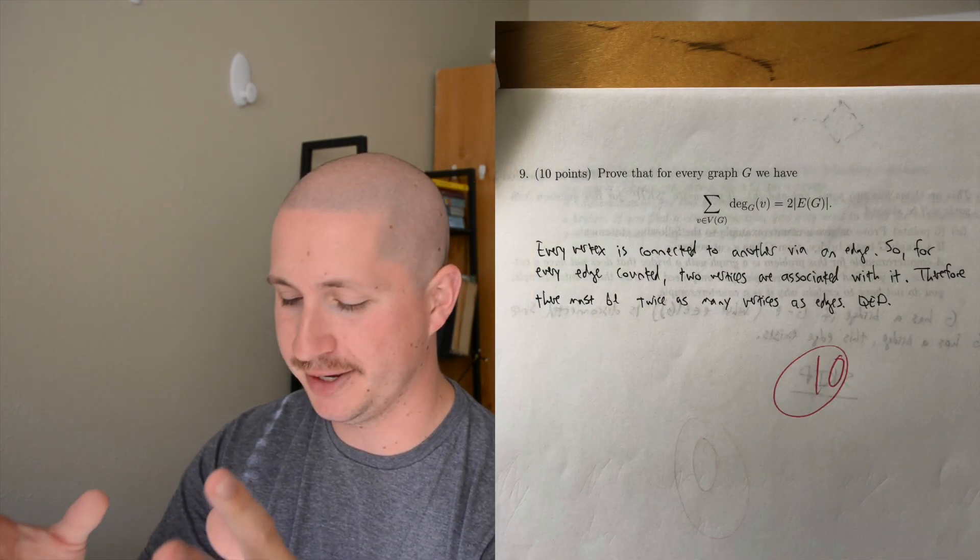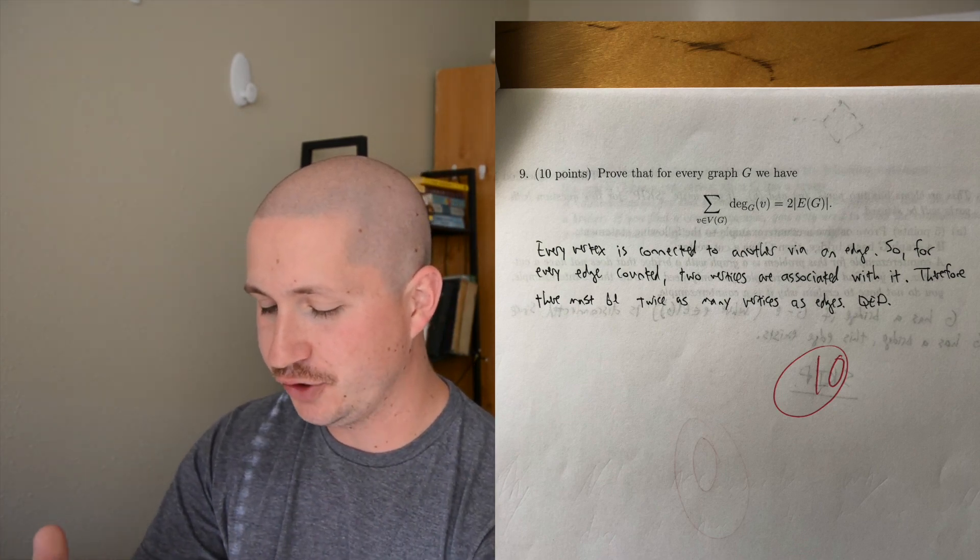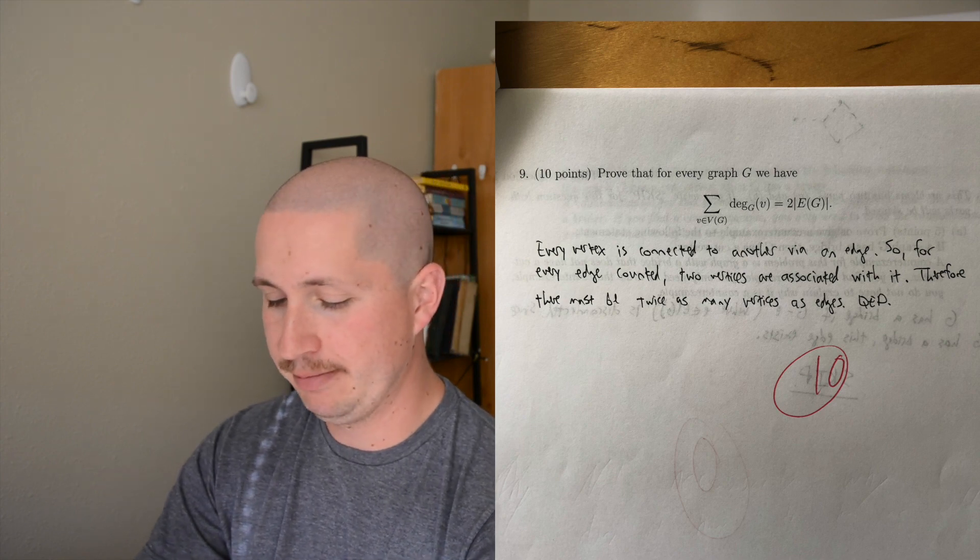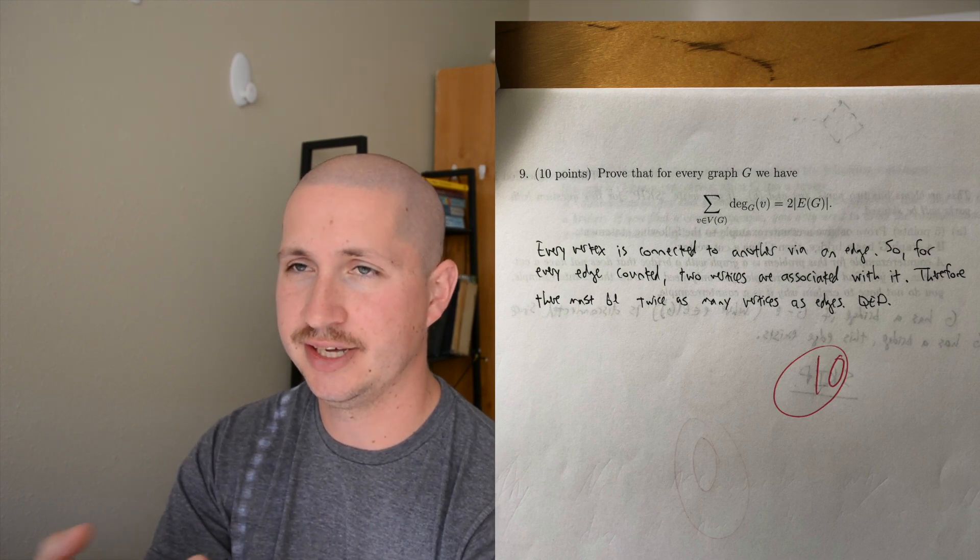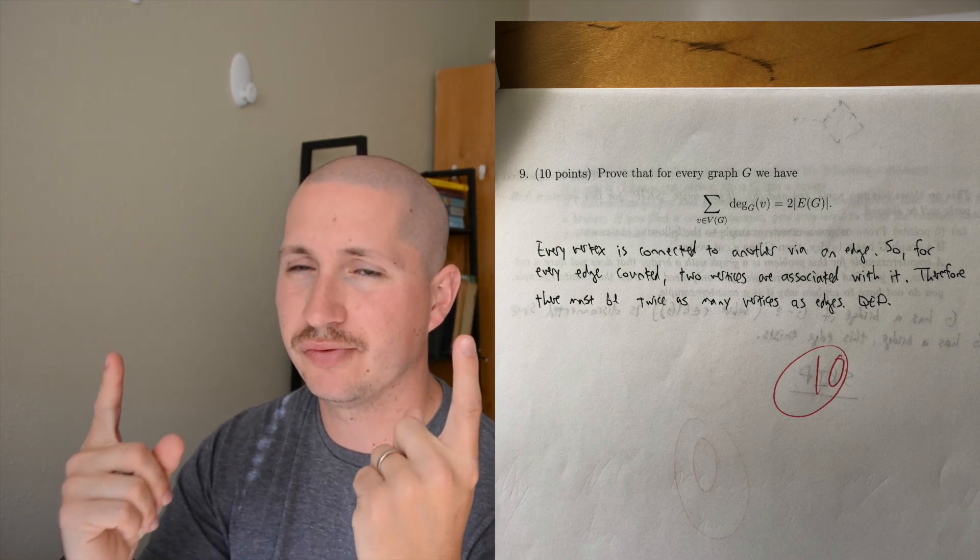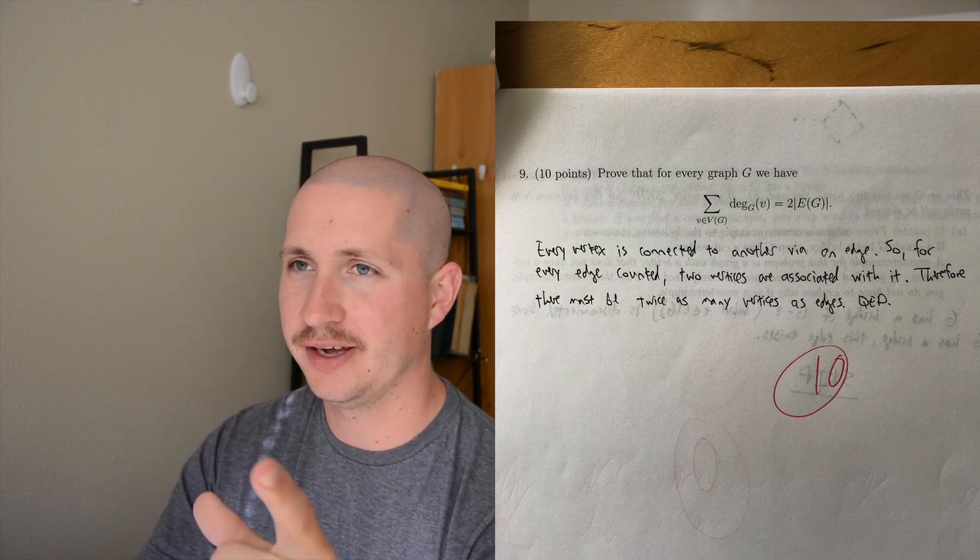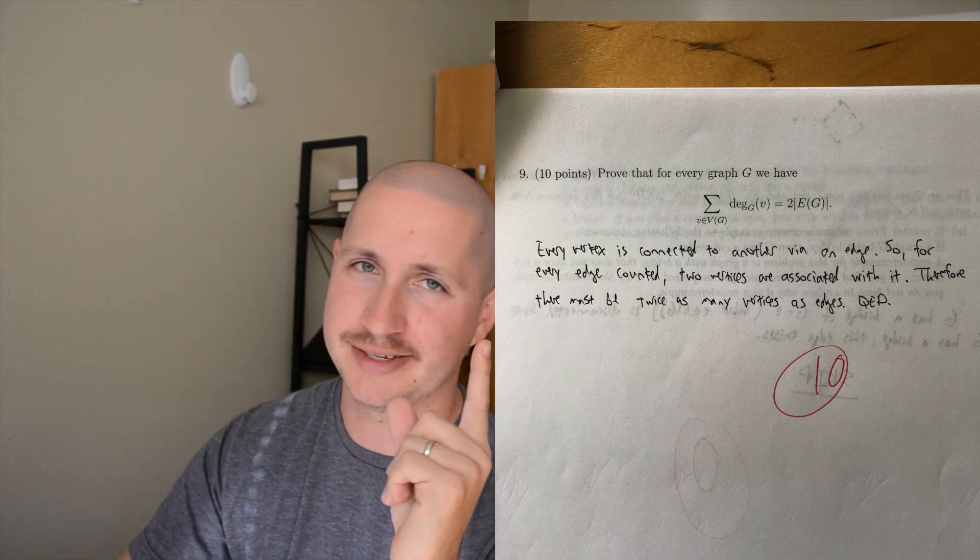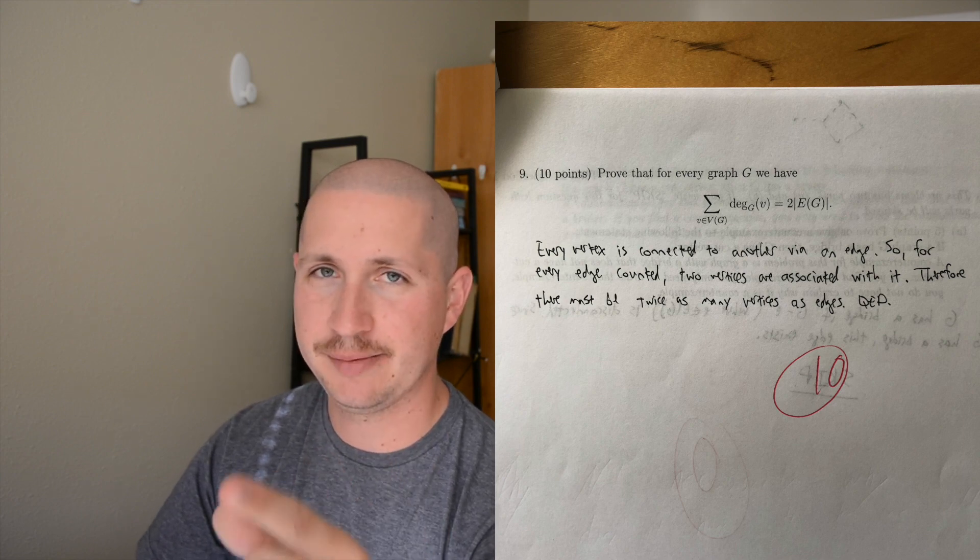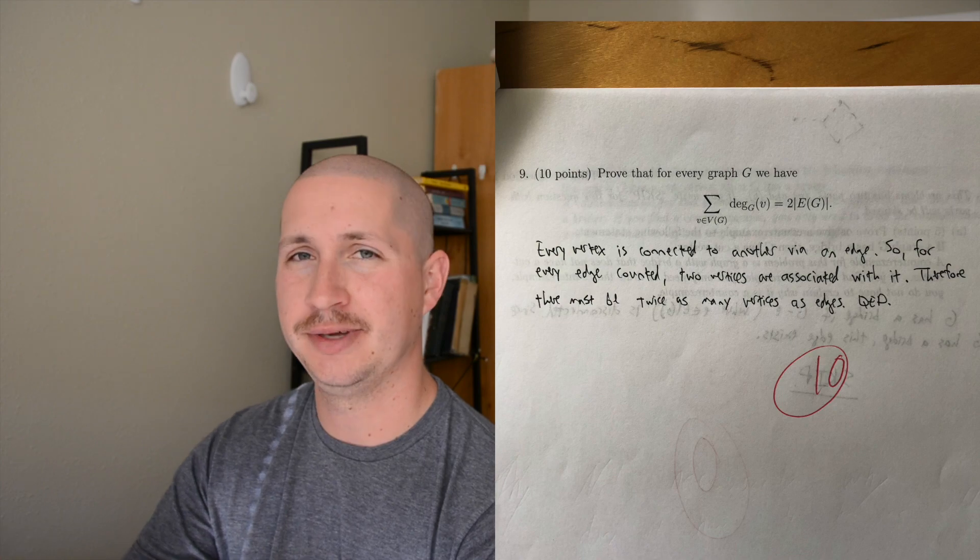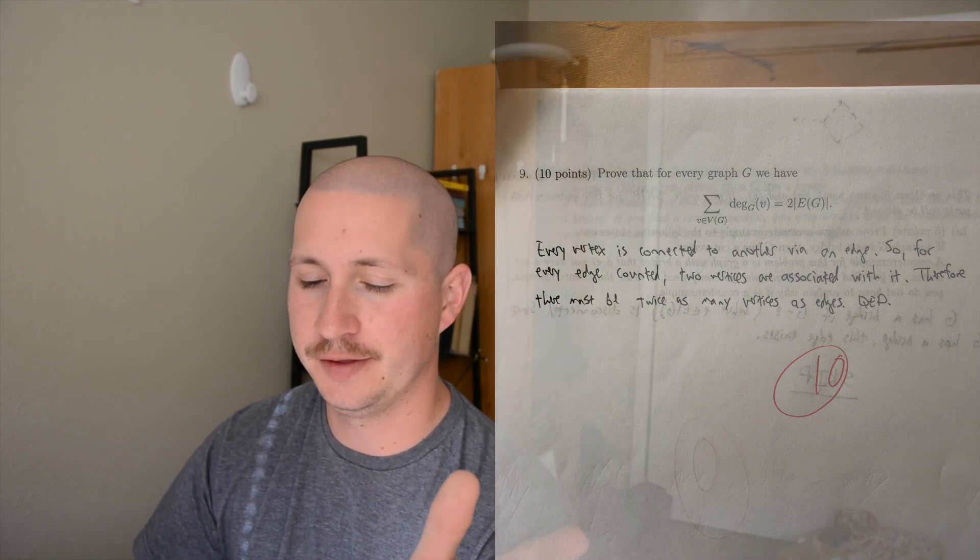Lastly, this was the easiest one and I chuckled because a friend and I were talking about it beforehand. I was like, I hope it's on there because it's a two-line proof. I got full credit. Prove that for every graph G, the sum of the degrees is exactly equal to two times the number of edges. I basically just used the definition. I said that by definition, every vertex is connected to another vertex via an edge. For every two vertices we have, we have one edge, because we're not talking about multigraphs, we're not talking about hypergraphs - these are standard graphs. That means every time you count an edge, there's going to be two distinct vertices associated with it. So no matter what the value is for the total number of edges in your graph, there's always going to be two times the number of vertices, that number doubled for the number of degrees.